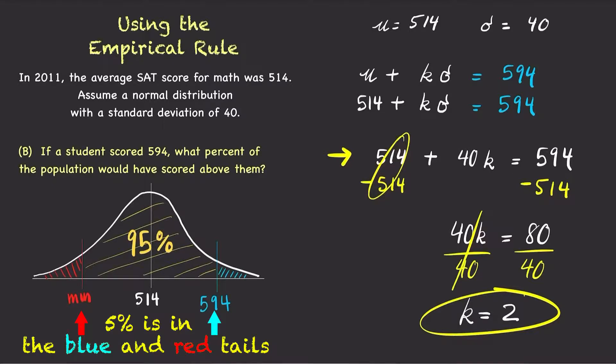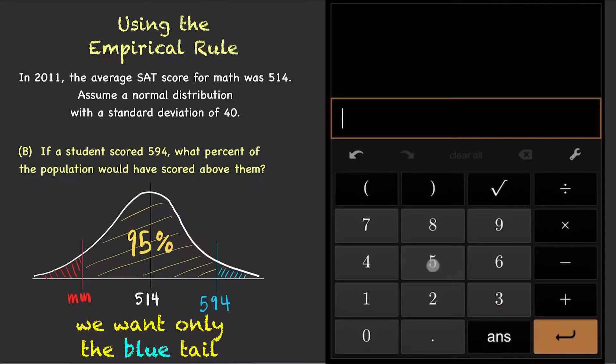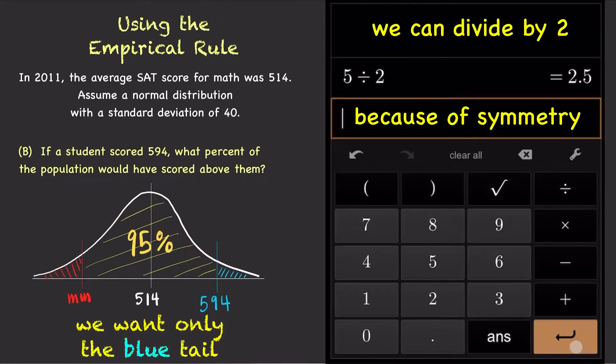But we're only interested in the percentage that is above 594. Since the bell curve is symmetrical and 5% falls outside of the middle 95%, we can cut the 5% in half, which gives 2.5% on the upper side. Therefore, 2.5% of the population scored above 594.